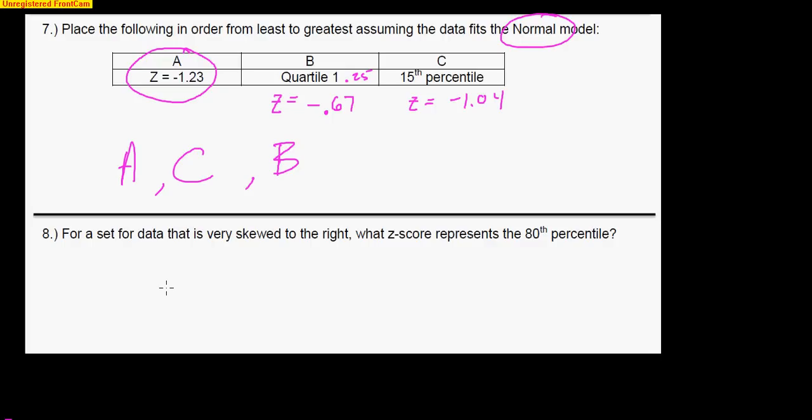Alright, number eight says, for a set of data that is very skewed to the right, what Z-score represents the 80th percentile? Well, here's the problem. If I'm very skewed to the right, unfortunately, there is just no way for me to answer this question. Remember, I cannot use normal CDF. I cannot use invert norm unless I am normal. So there is no way for me to answer this question. Now, a lot of kids say, is there even an answer? Well, yes, there is an answer. I mean, somewhere on this skewed right model is a value that represents the 80th percentile.